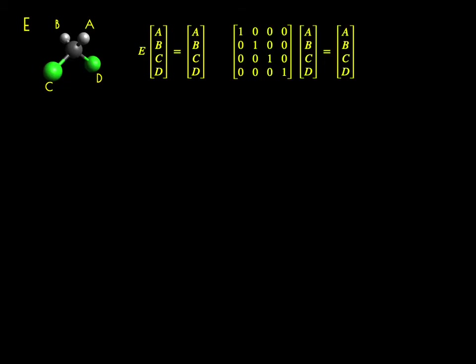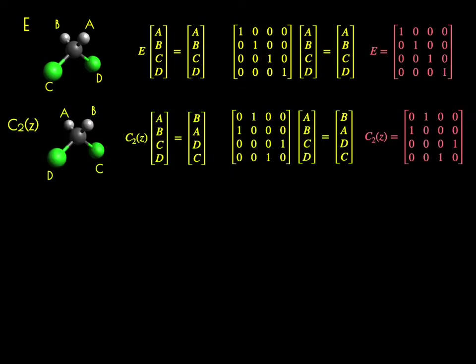The 4×4 identity matrix with ones on the diagonal specifies the A, B, C, and D positions for the E operator. We can do the same for C2Z, where the 1s and 0s exchange places to specify that A and B positions change and C and D positions change. Similarly, we construct 4×4 matrices for sigma XZ and sigma YZ.